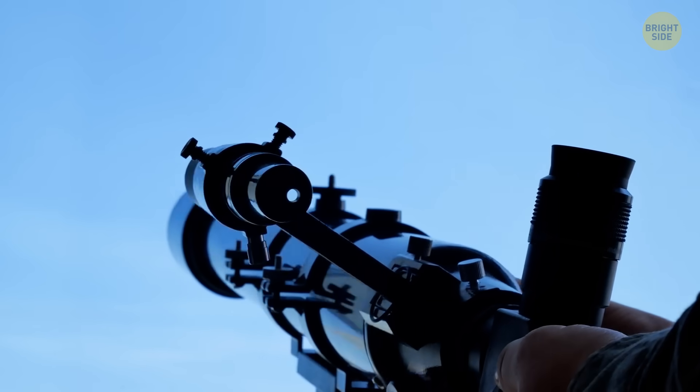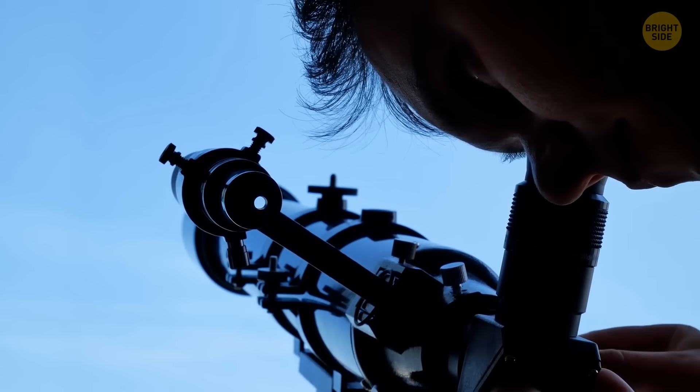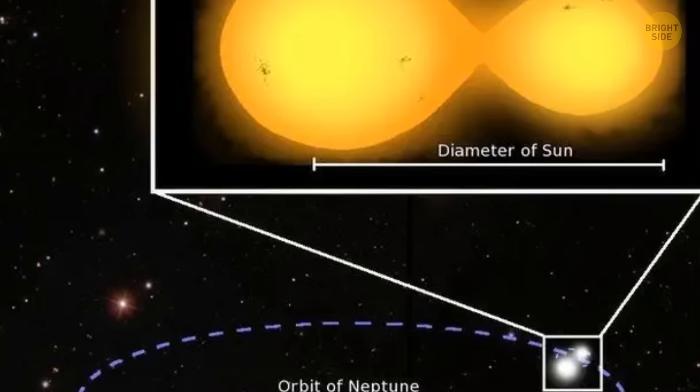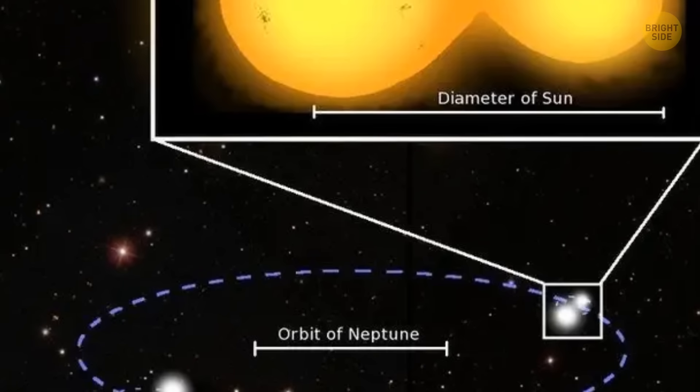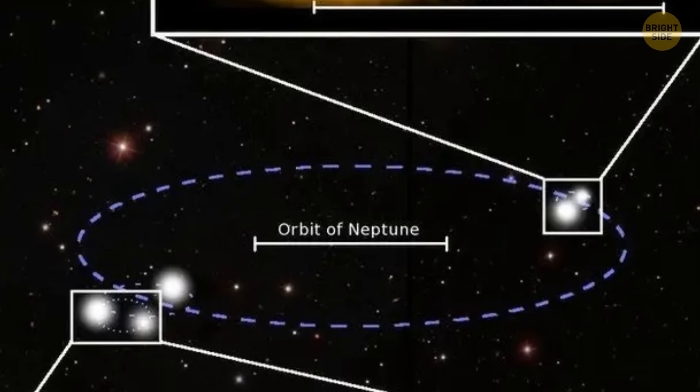But all this pales in comparison with the recent discovery. A few years ago, a team of researchers discovered an actual five-star solar system. It's located 250 light-years away in the Ursa Major constellation and was discovered by the Super WASP Project.